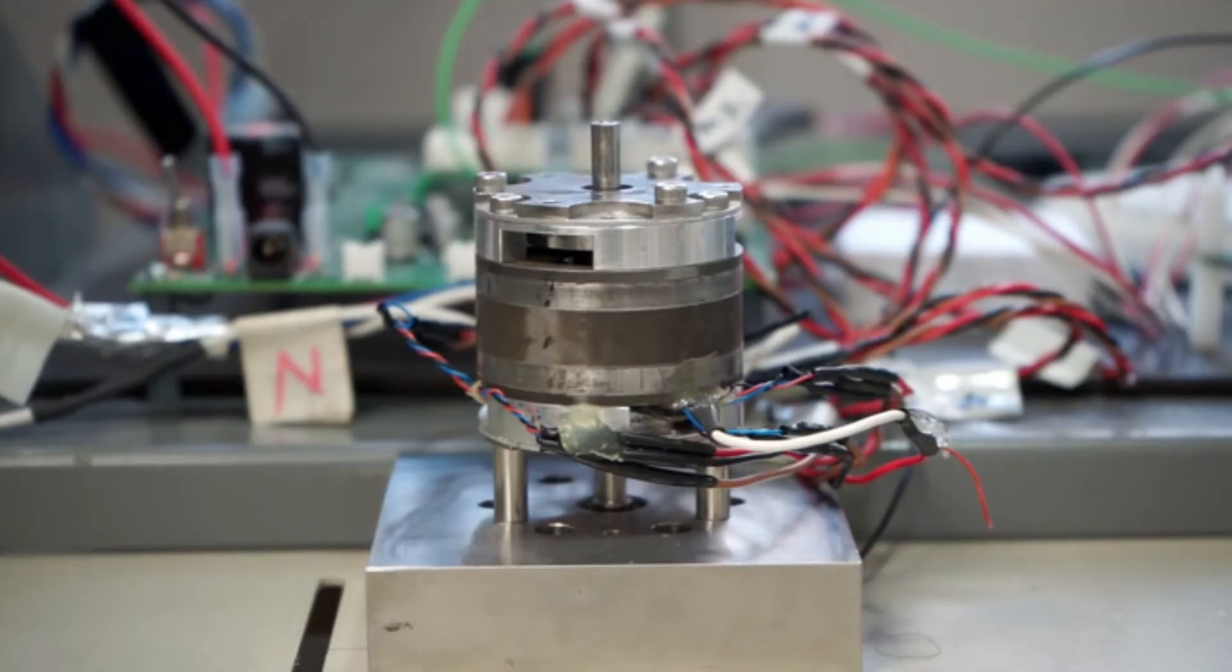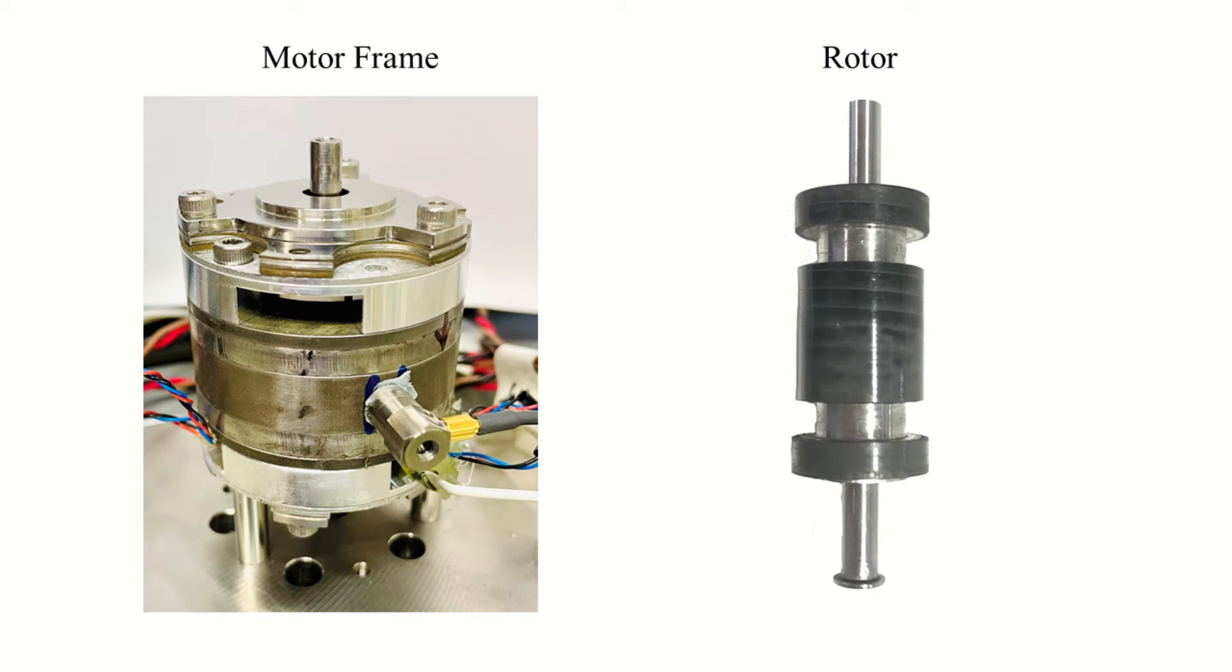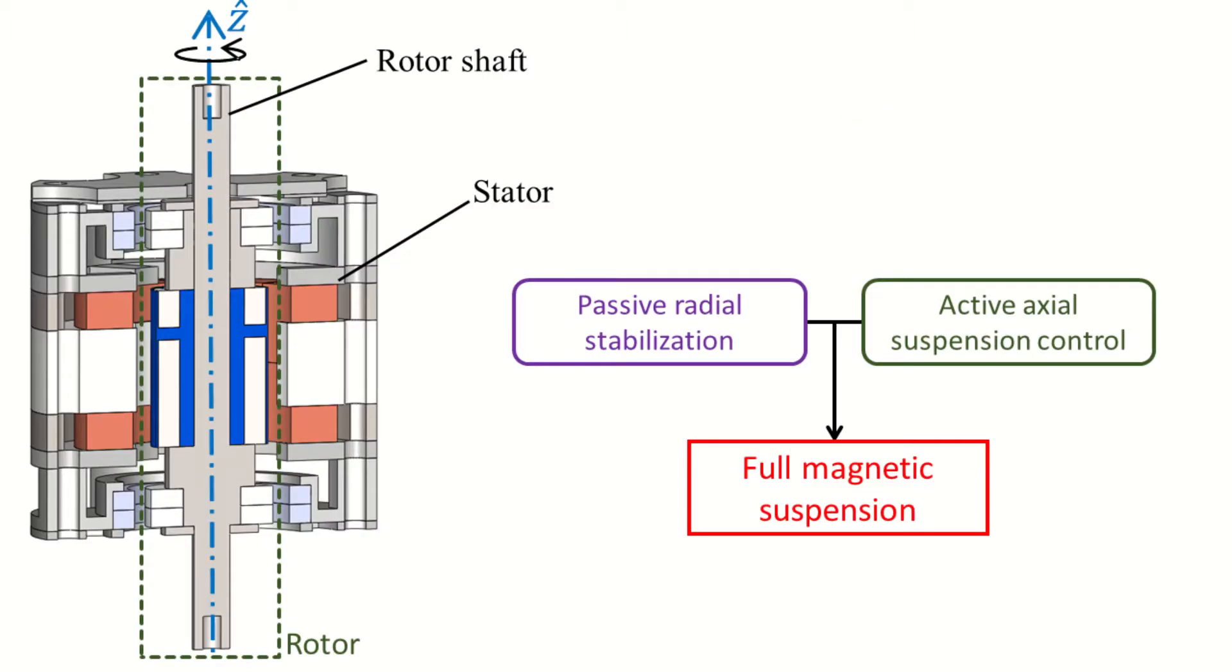In this video, we bring a machine that applies a similar suspension principle. We are going to describe a bearingless motor with active control along a single axis. In other words, it is an electric machine that combines passive stabilization and active regulation as levitation techniques.